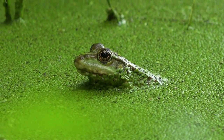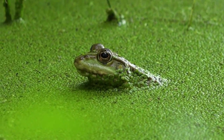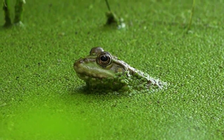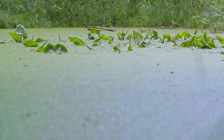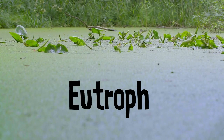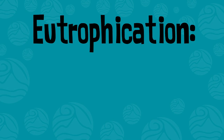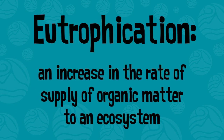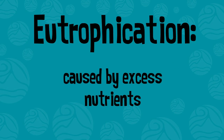Have you ever come across a pond or lake whose surface was overgrown with mucky green plants and algae? If so, you might have seen some of the symptoms of a eutrophic waterbody. Eutrophication, an increase in the rate of supply of organic matter to an ecosystem, is caused when nutrients are in excess.